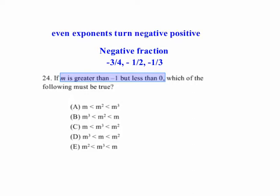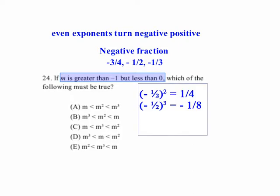And we've got to remember that even exponents turn a negative fraction positive. Let's look at one, for instance. Let's just say that m is negative 1 half. Well, negative 1 half squared is 1 fourth. That's a positive number. So negative 1 half squared is going to be the greatest number.